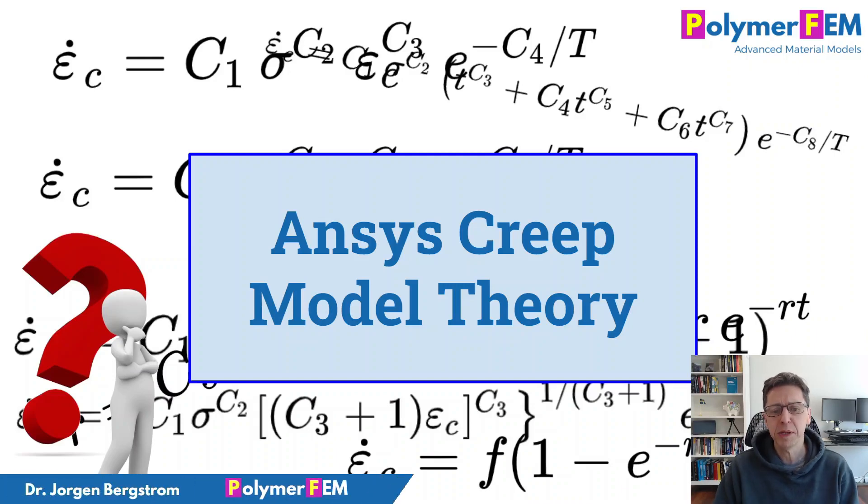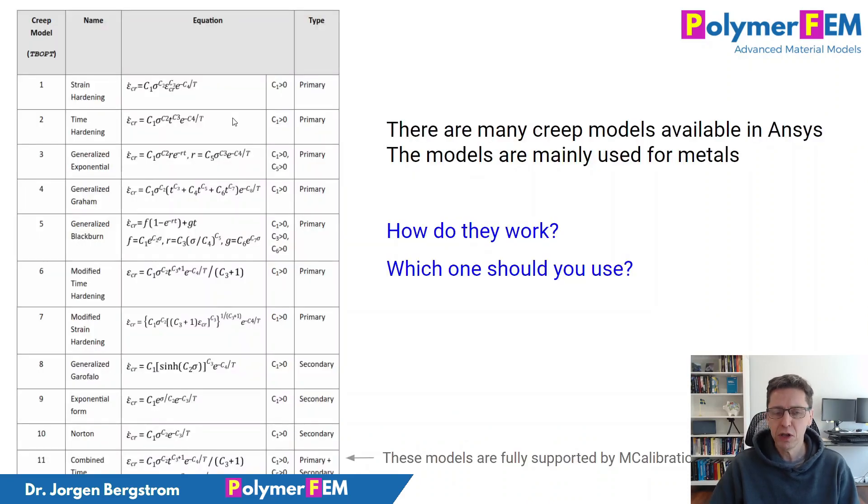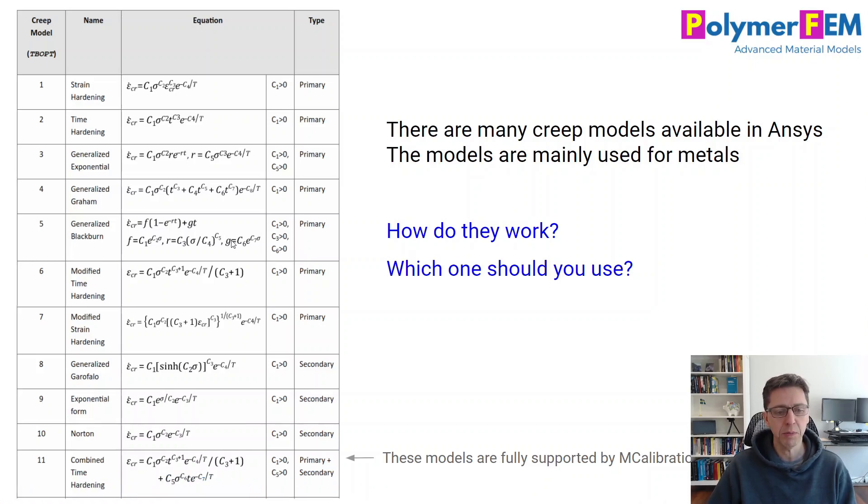Hi, today I'm going to talk a little bit about the different creep models that are available in ANSYS Mechanical. If you look at the ANSYS Manual, you will see that there are a lot of different creep models available that you can use. Here I copied the first 11 that are available, and these happen to be the ones that I have implemented in MCalibration for direct use. But there's so many of them. So which one would you use? Why would you use them? Which one should you not use? That's what I want to talk about today.